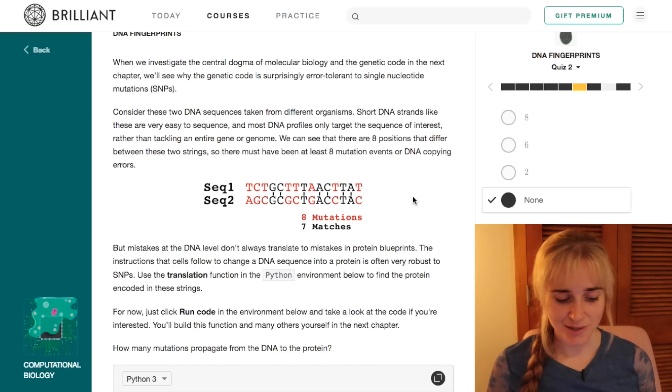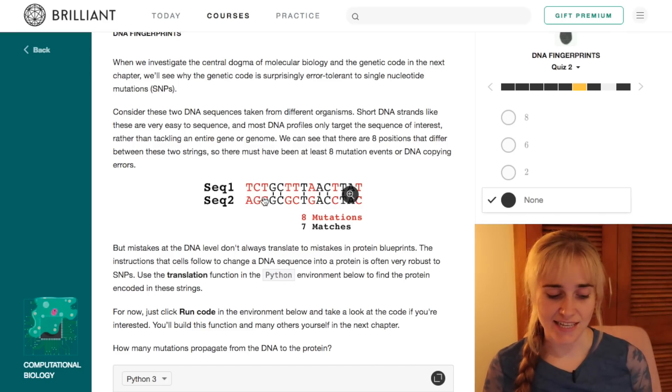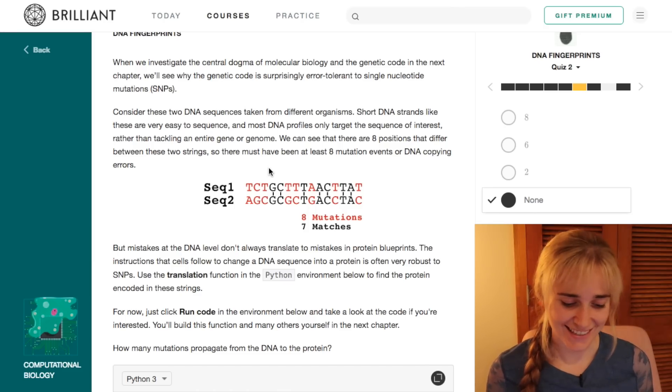So just as a quick refresher, we have DNA which is made up of, in this case, four bases: A, T, G, and C, and they pair with each other to form this double helix set of instructions for our cells.